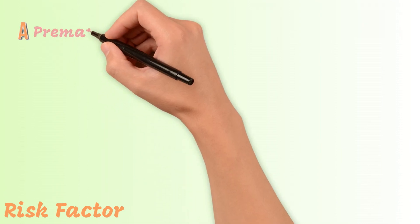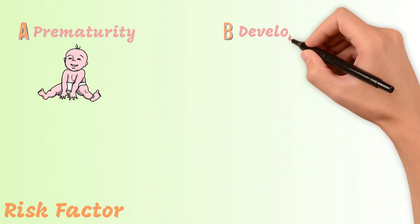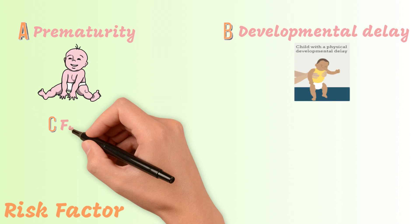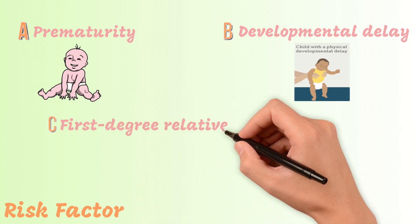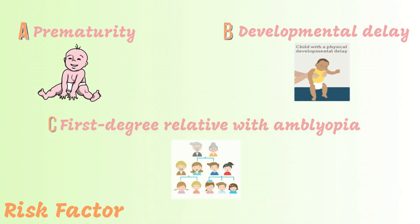Risk factors of amblyopia include prematurity, developmental delay, and having a first degree relative with amblyopia.